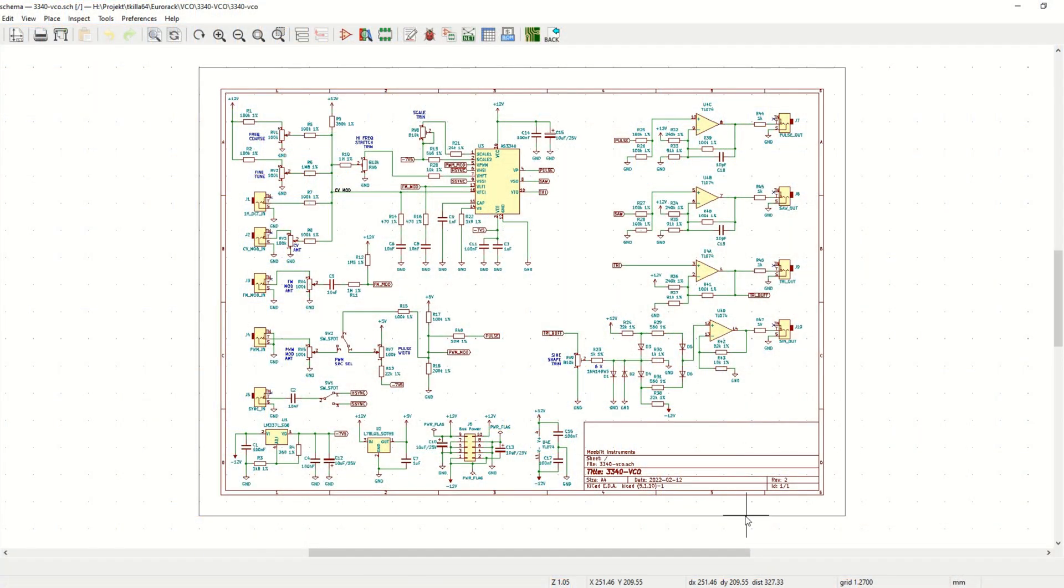Okay, so if we start looking at the schematic diagram, we see that the centerpiece here is of course the AS 3340, the VCO chip. And we have some positive and negative voltages that are generated down here. So there's a minus 7.5 voltage that is fed to the negative supply of the 3340.